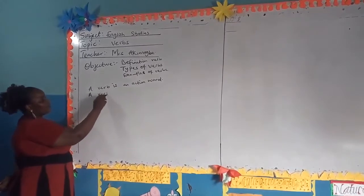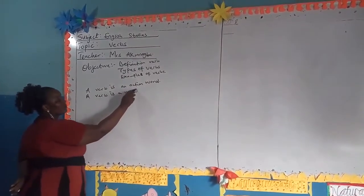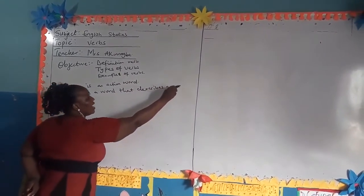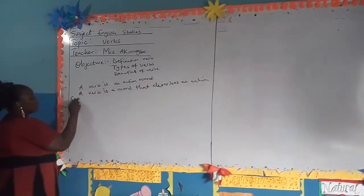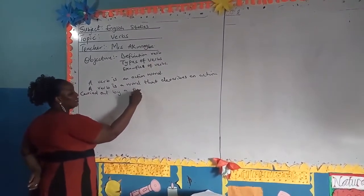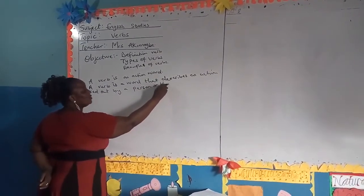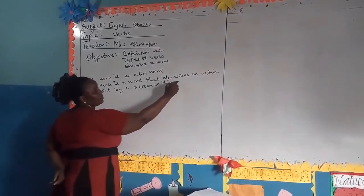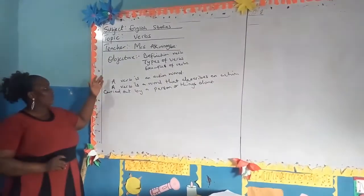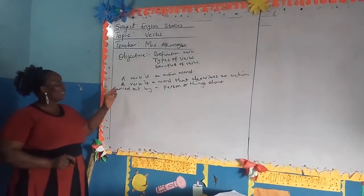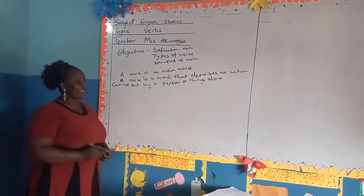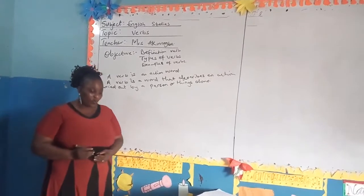You can also say, a verb is a word that describes an action carried out by a person or things done. That's the reason why we said a verb is an action word. Or you can also say, a verb is a word that describes an action carried out by a person or things done. So that is to explain what a verb means.